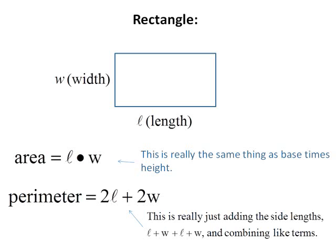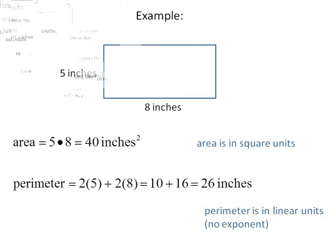Rectangle, oh Rectangle. Area is length times width with Percival. Perimeter is twice the length plus twice the width.